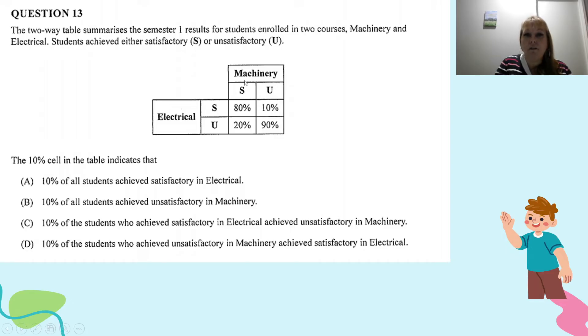Now, out of the ones that passed my Machinery course, 80% of the ones that passed also passed Electrical. So that's not saying that 80% of my Machinery class passed, it's saying that out of the ones who did pass, they passed both subjects. And then out of the ones who passed my Machinery course, 20% of the ones that passed failed Electrical.